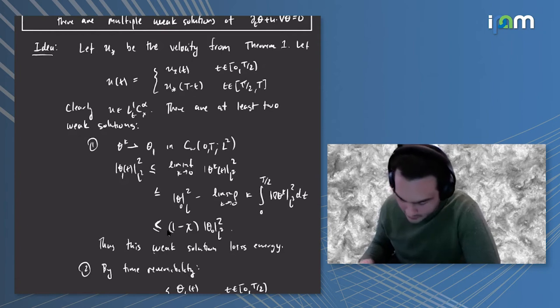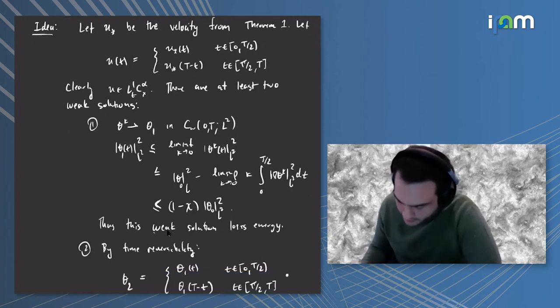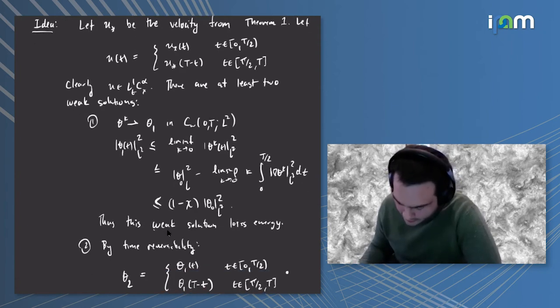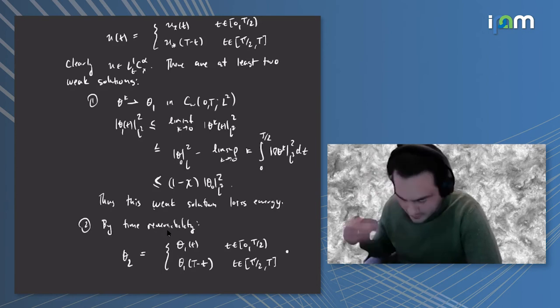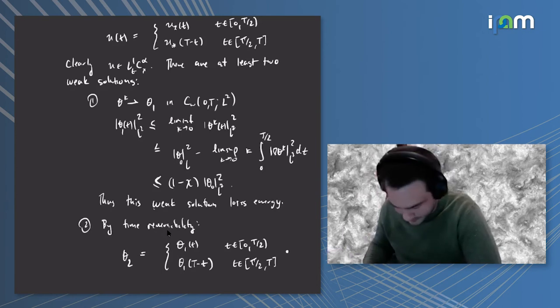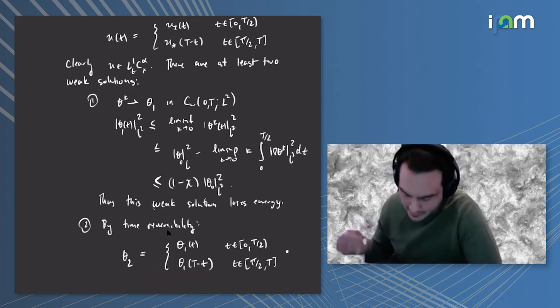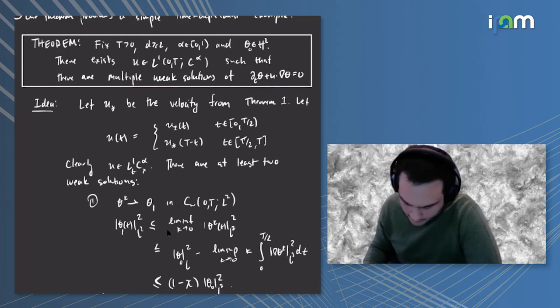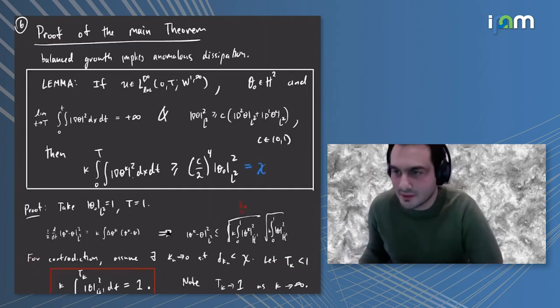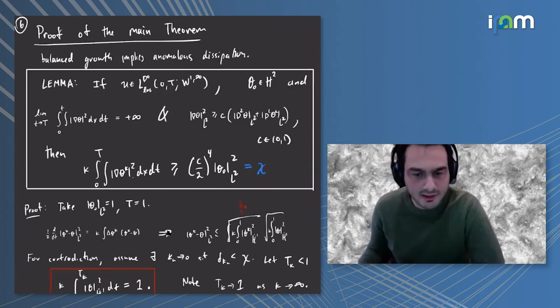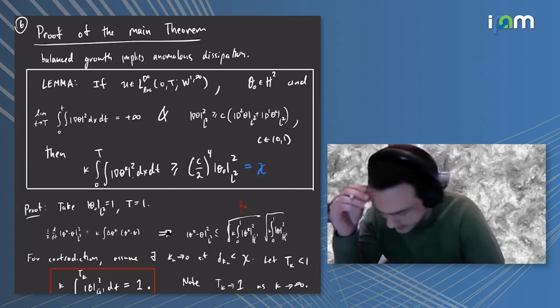On the other hand, there's another weak solution which is just the time reversal of that first piece. It doesn't come from a zero diffusion limit but it exists and reaches at the final time its initial data. It's a very simple construction. Maybe I briefly pause and ask any questions.